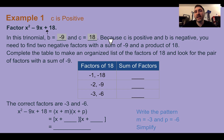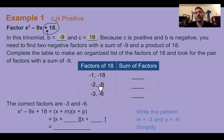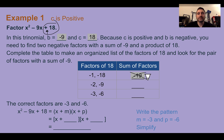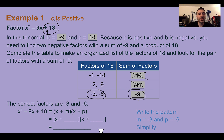To solve the puzzle of what multiplies to c but adds to b, list all factor pairs of 18: negative 1 and negative 18, negative 2 and negative 9, or negative 3 and negative 6. Adding each pair: negative 19, negative 11, and negative 9. Negative 9 is what we want, so the factors are negative 3 and negative 6. Plugging in: x plus negative 3 times x plus negative 6 simplifies to x minus 3 times x minus 6.